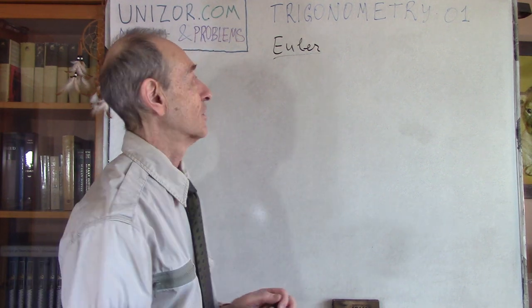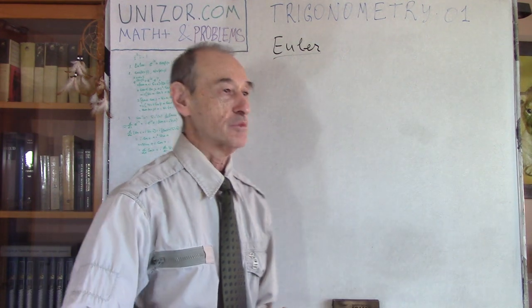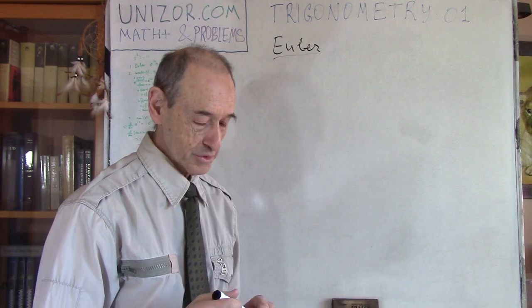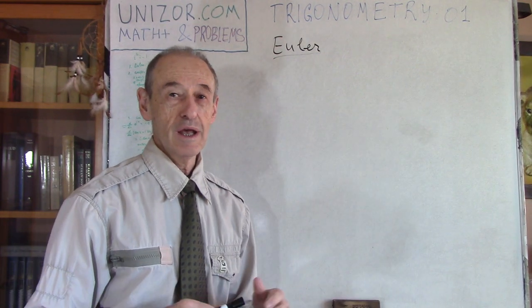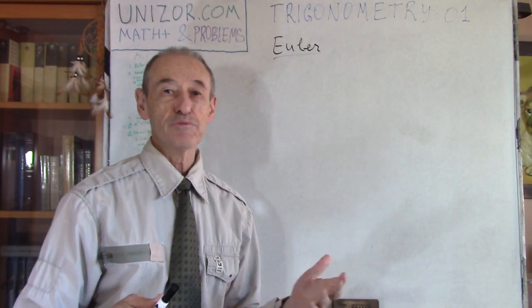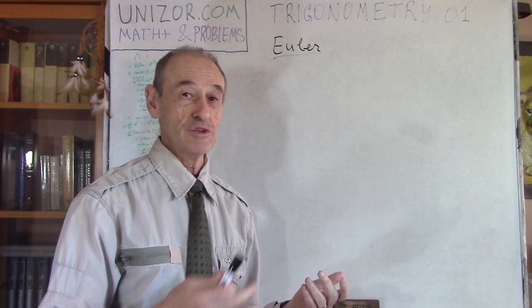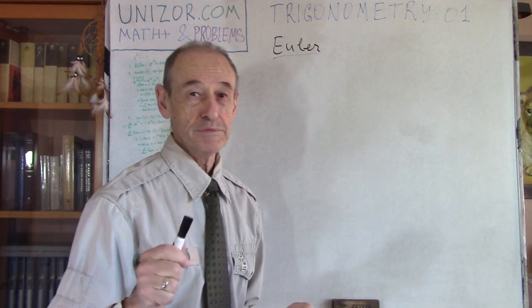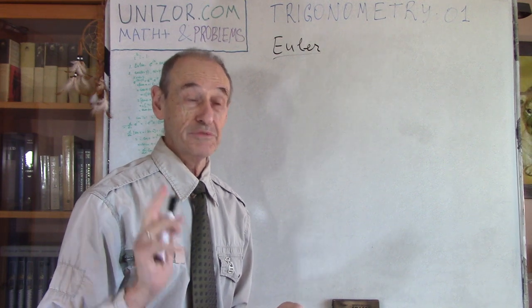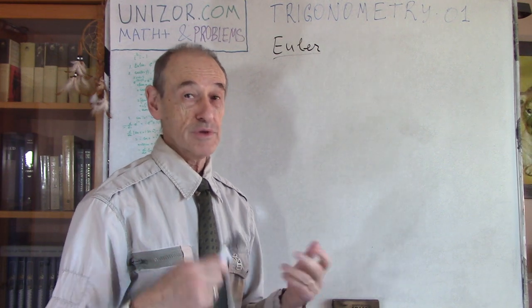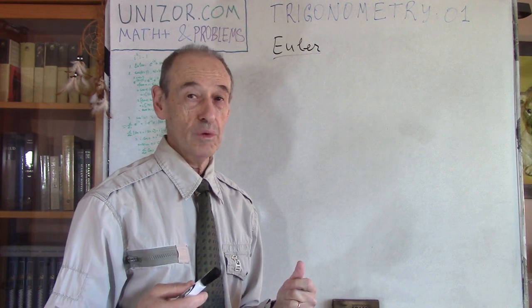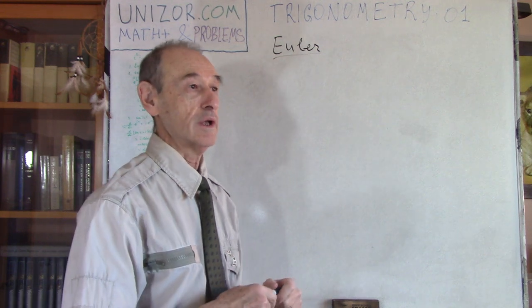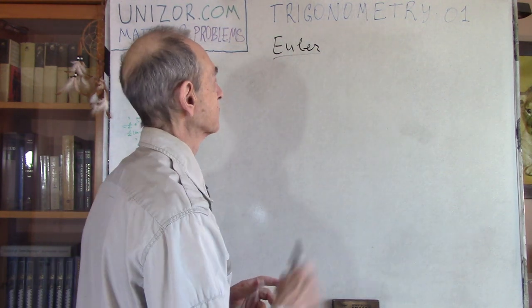So, Euler and Euler's formula. What is Euler's formula? It's quite a famous formula. I would put this formula in its importance on the same level as Einstein's formula about the relationship between mass and energy — E equals mc squared. By the way, I do have a course called Physics for Teens where I present many different things, and then Relativity for All, where I address Einstein's formula and basically derive it.